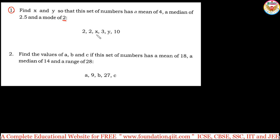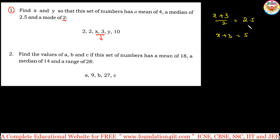The median is 2.5, so x and 3 are the two middle values. We use: (x + 3) / 2 = 2.5. There are 6 numbers total (even), so x + 3 = 5, which gives x = 2. That means the set becomes: 2, 2, 2, 3, 10, and we still need y.